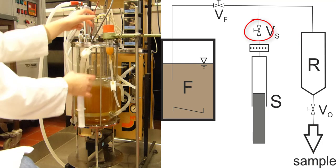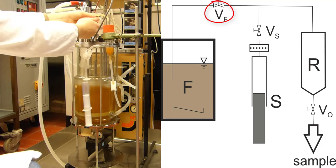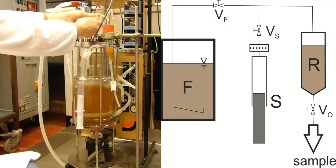Valve S is then closed and valve F to the fermenter is opened such that fluid is sucked into the reservoir.